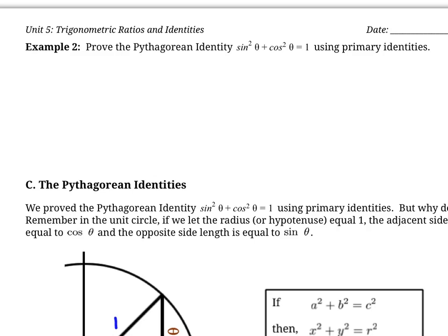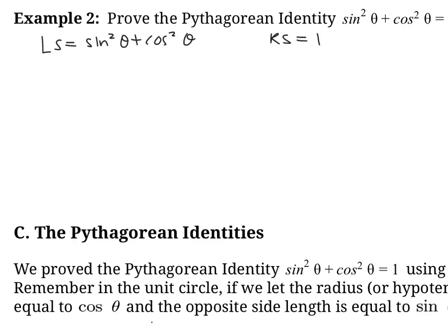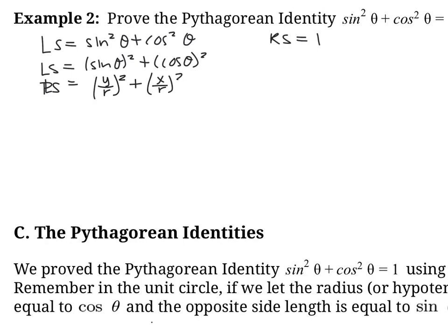Let's start by breaking it into its left side and right side. On our left side we have sin²θ + cos²θ, and the right side is supposed to equal 1. There's nothing to simplify on the right side, so let's focus on the left side. Sine squared theta means sine of theta all squared, and cos squared theta means cos of theta all squared. Using the primary identities, we change sine θ to (y/r)², and cos θ to (x/r)². This gives us y²/r² + x²/r².